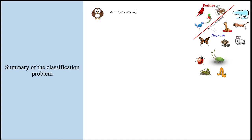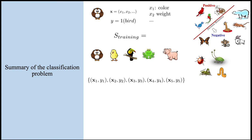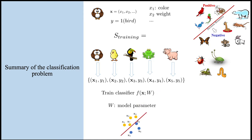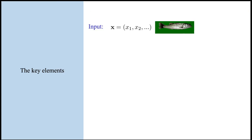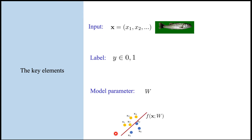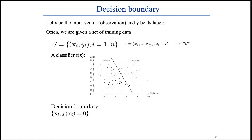Here is our classification problem. We're drawing some boundary. We've got inputs with some features, and we're outputting a one or a zero. We have our training set consisting of inputs and labels, and we're training a classifier by setting a set of parameters W — that is the thing that draws this line. The key elements in our fishy example are the inputs, the labels, and that model parameter. That line is known as a decision boundary.